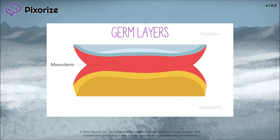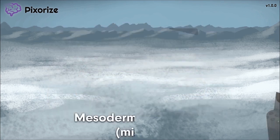Because of this, the mesoderm gives rise to the systems that lie between the skin and the GI system. Most notably, the muscles, the bones, the circulatory system, and the urogenital systems come from the mesoderm.